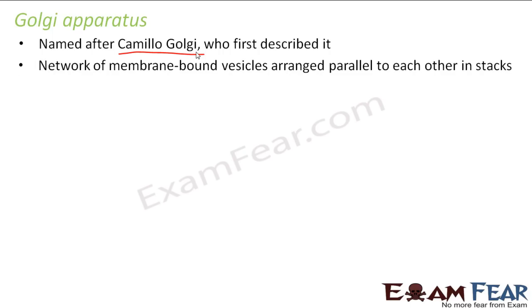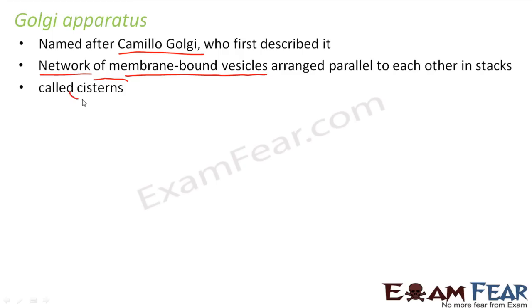The Golgi apparatus is a network of membrane-bound vesicles arranged parallel to each other in stacks. Vesicles are sack-like vessels containing something. These vesicles are arranged parallel to each other in stacks, and those stacks are known as cisterns.